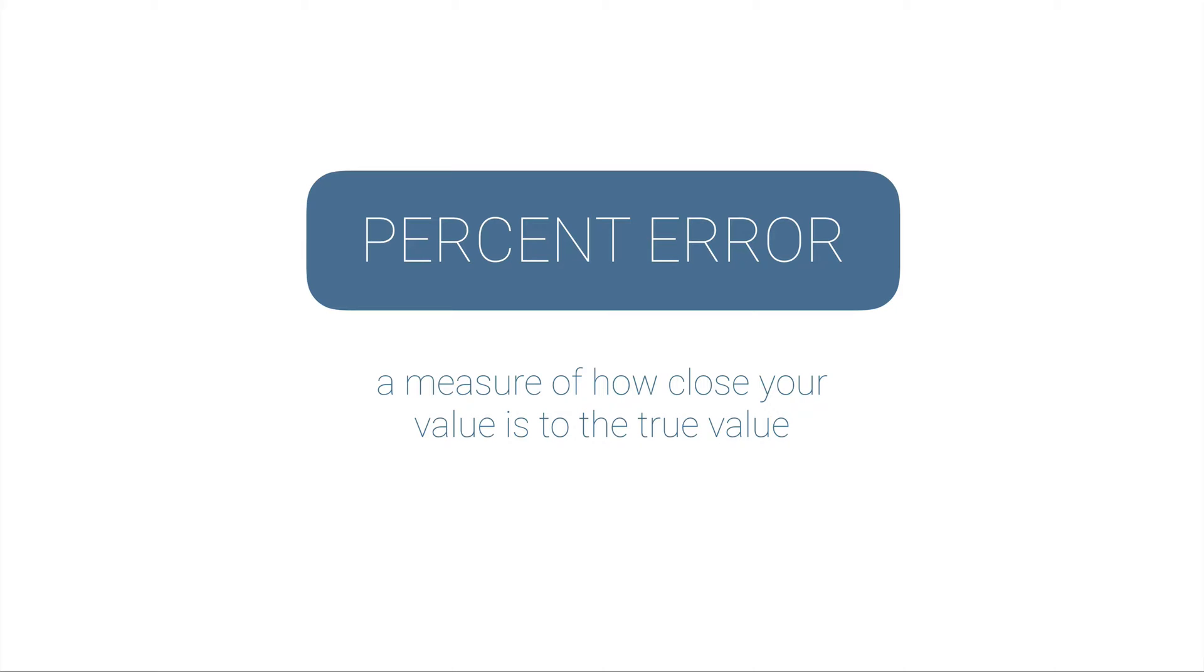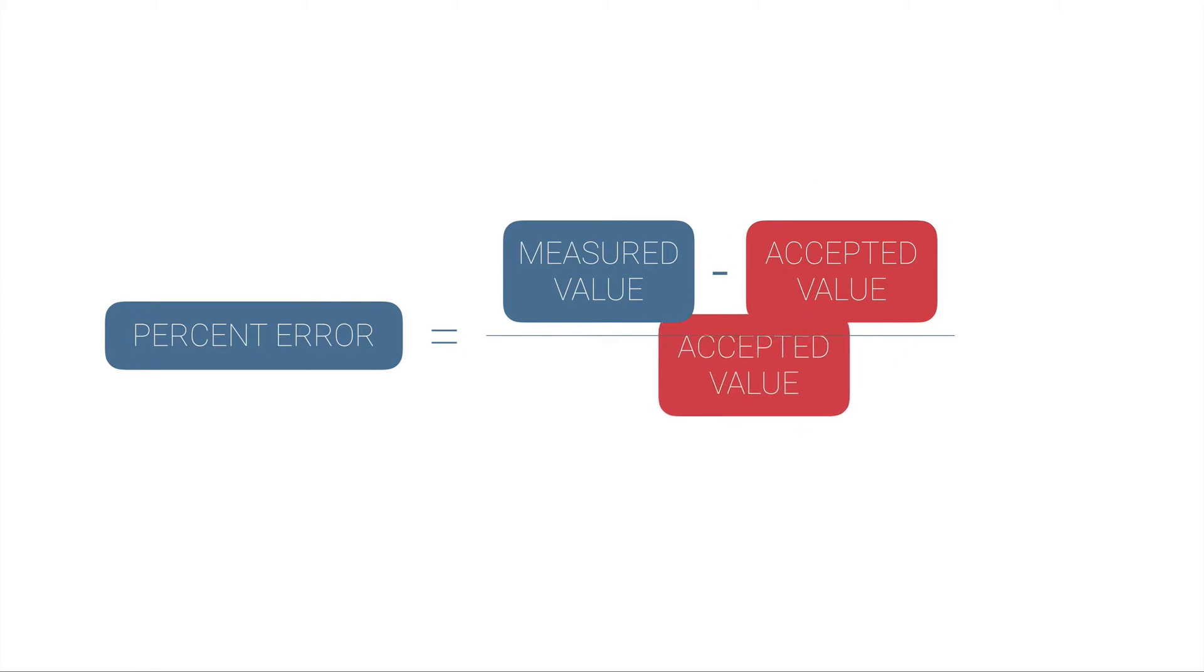Here's what percent error is: it's a measure of how close your value is to the true value. Here's how we calculate it: we take our measured or experimental value—what we got in the lab—and subtract away the accepted value. We divide the difference by that same accepted value, then multiply by 100 to turn it into a percent. Don't forget that subtraction on top has to be in parentheses.